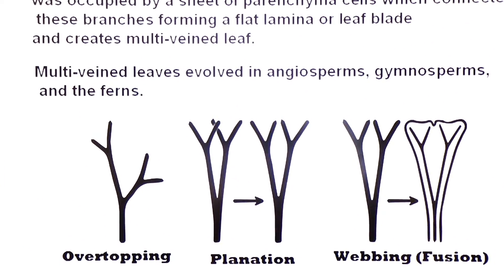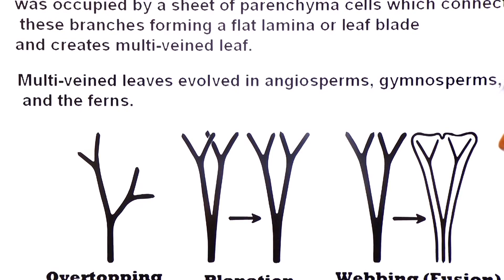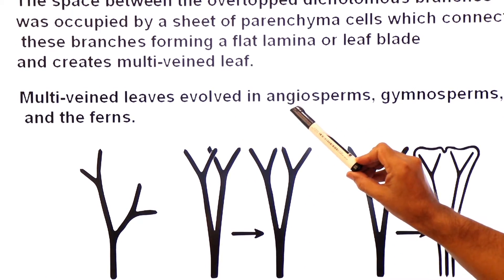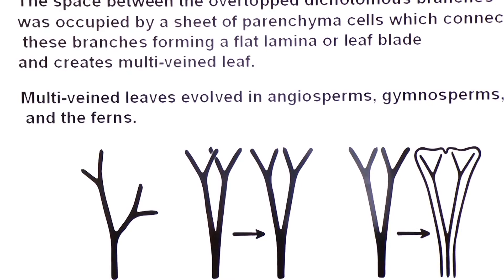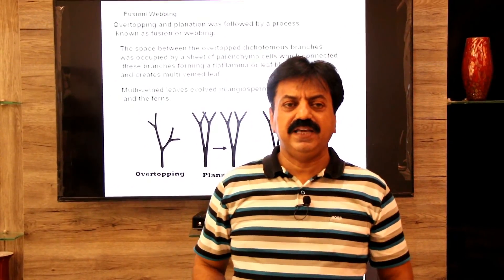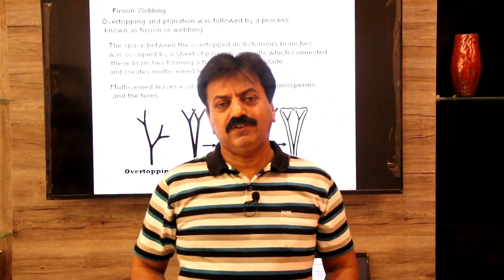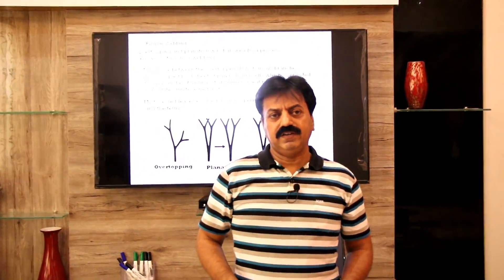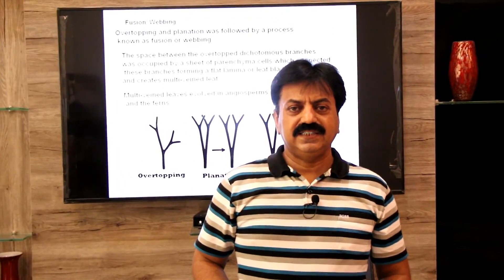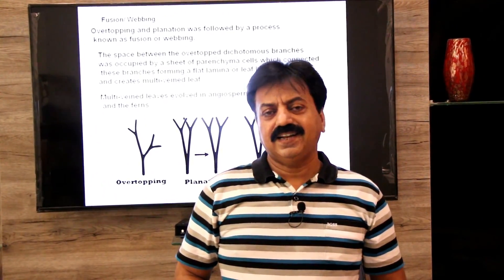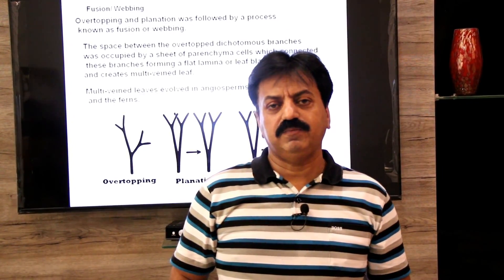Multiple-vein leaves evolved in angiosperms, gymnosperms, and ferns. In today's lecture we covered the evolution of single-vein leaves and the evolution of multiple-vein leaves. Tomorrow I will discuss another class of vascular plants — class Filicopsida. Thank you, dear students, and wish you all the best.